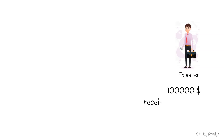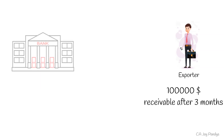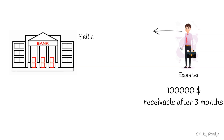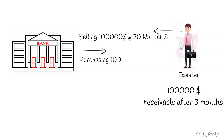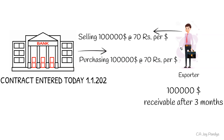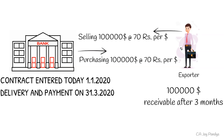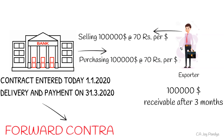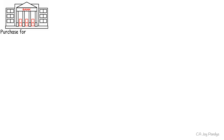An exporter having one lakh dollar receivable after three months enters into a contract with a bank for selling one lakh dollars at the rate of rupees 70 per dollar. The bank will be purchasing one lakh dollars at rupees 70 per dollar. This contract was entered into today, that is 1st January 2020, with delivery and payment date on 31st March 2020. This type of contract — where the contract is entered today but delivery and payment is in the future — is known as a forward contract. For the bank, this is a purchase forward contract.